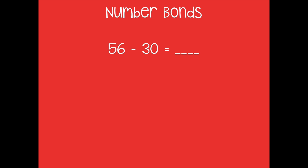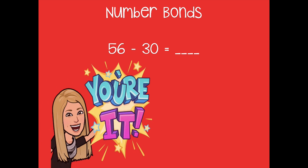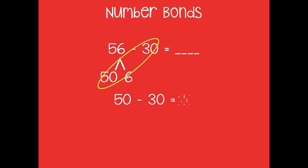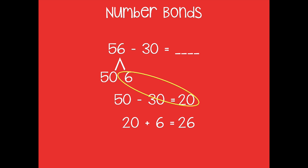Now let's solve the same problem with a number bond. Pause the video, solve, and click play when ready. We break 56 into 50 and 6. Now I subtract my tens: 50 minus 30 equals 20. Then I combine that back with my 6: 20 and 6 equals 26. When subtracting, that 6 just comes back in through addition because we've already subtracted our 30. So 56 minus 30 equals 26.